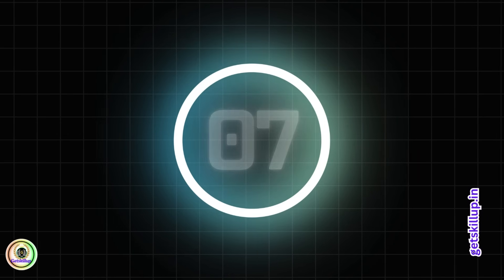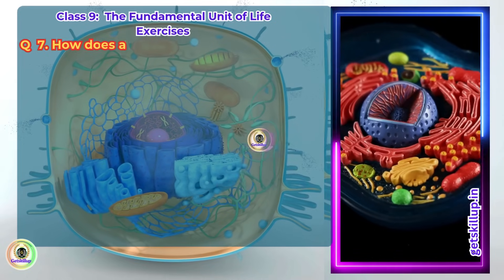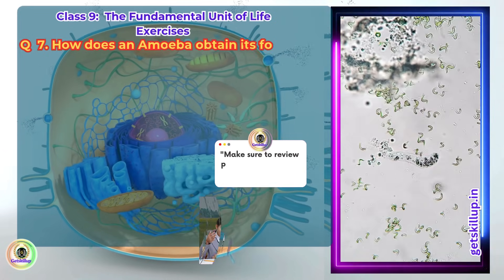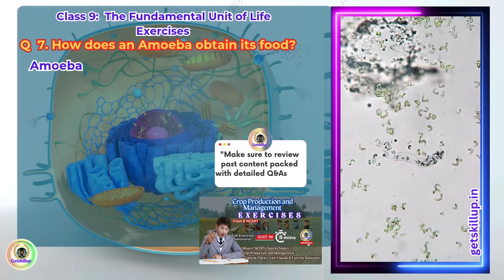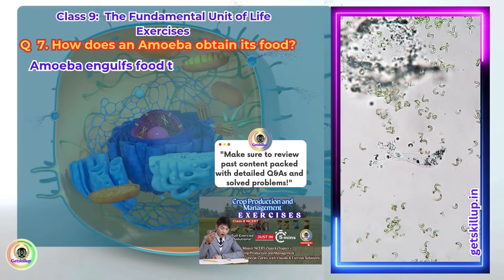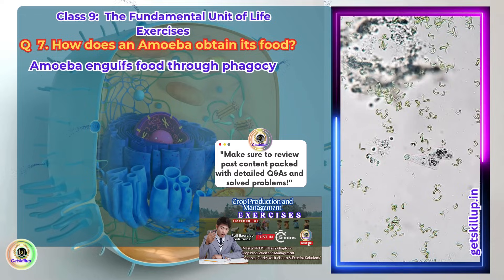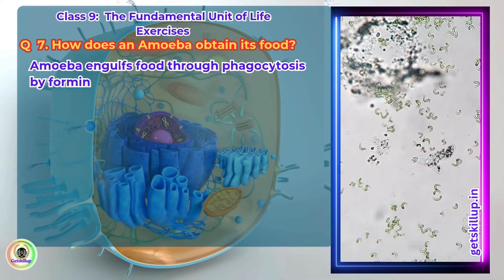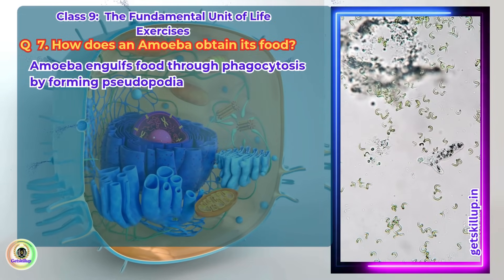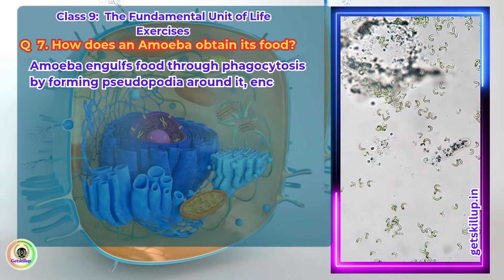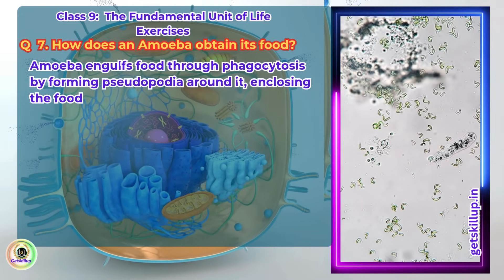Q7. How does an amoeba obtain its food? Amoeba engulfs food through phagocytosis by forming pseudopodia around it, enclosing the food in a food vacuole.